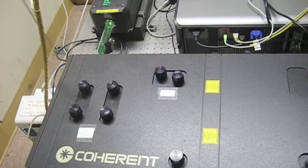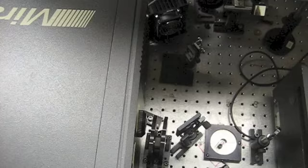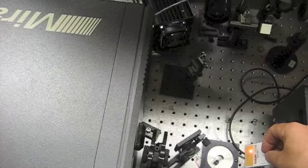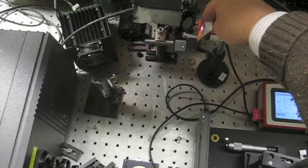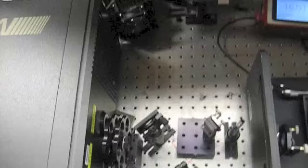This is a Coherent MIRA 900 femtosecond laser, which we'll use for today's lab. The laser produces a stream of pulses at 800 nanometers. 800 nanometers is too far into the red to easily see, but you can see the beam quite easily on this fluorescent card. Right now, the beam is being reflected to some mirrors and into a power meter. The average power is about 300 milliwatts.